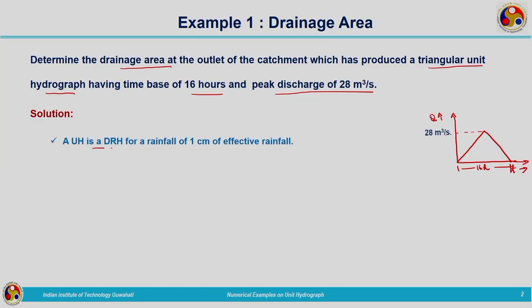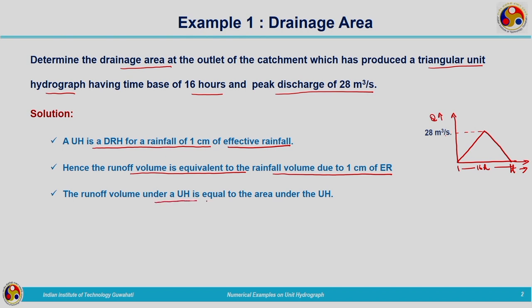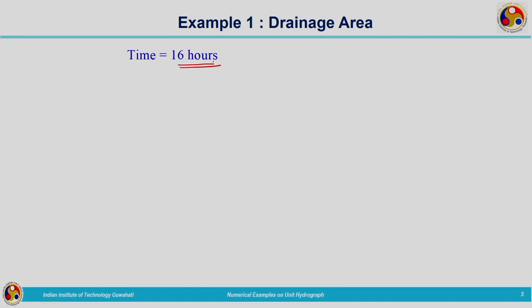A unit hydrograph is a direct runoff hydrograph for a rainfall of 1 centimeter effective rainfall. The runoff volume is equivalent to the rainfall volume due to 1 centimeter of effective rainfall — after deduction of initial abstractions the effective rainfall is equivalent to 1 centimeter. The runoff volume under the UH is equal to the area under the unit hydrograph. The time base of 16 hours is converted into seconds, giving 57,600 seconds.